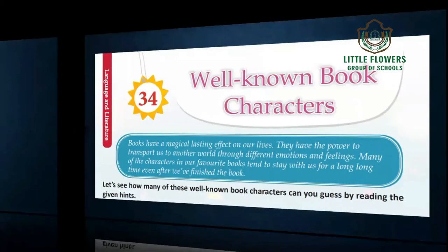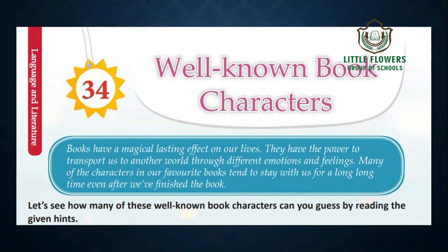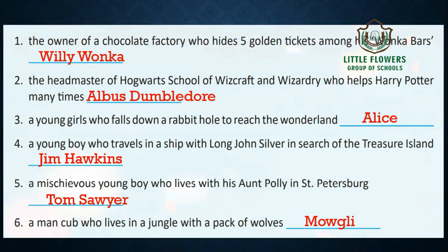Now exercise number 34: you are given clues about famous book characters and have to identify them. Number one: the owner of a chocolate factory who hides five golden tickets among his Wonka bars — he is Willy Wonka. Number two: the headmaster of Hogwarts School of Witchcraft and Wizardry who helps Harry Potter many times — he was Albus Dumbledore. Number three: a young girl who falls down a rabbit hole to reach Wonderland — she was Alice. Number four: a young boy who travels on a ship with Long John Silver in search of Treasure Island — he was Jim Hawkins.